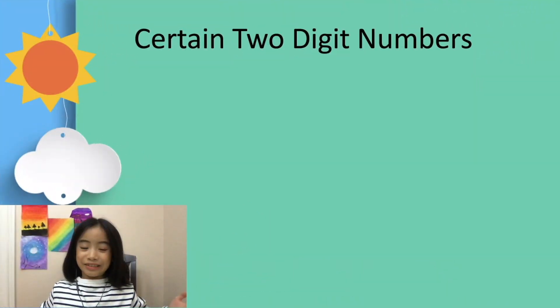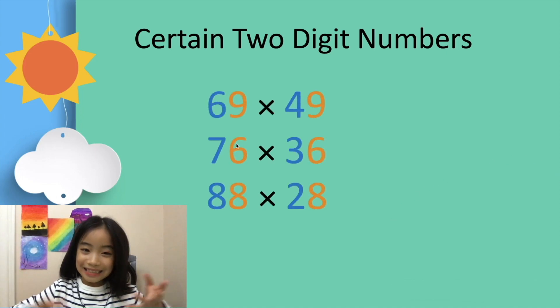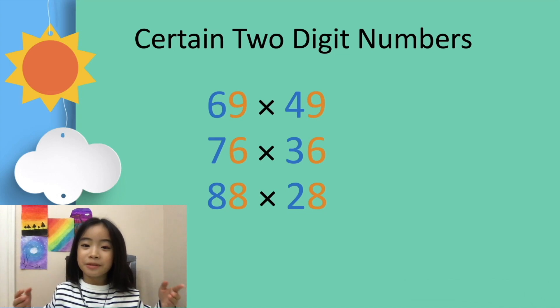This trick works for certain two-digit numbers. As you can see, it works for 69 x 49, 76 x 36, and 88 x 28.